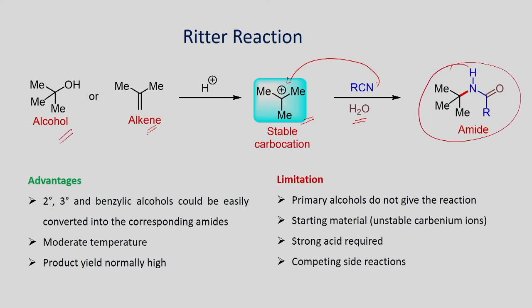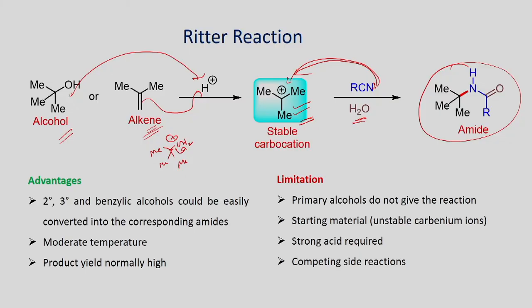If you have isobutene or tertiary butanol, when you react with acid, protonation occurs and you form the hydronium ion, which can lose water by E1 elimination to form a stable tertiary carbocation. This tertiary carbocation can readily undergo reaction with the lone pair of the nitrogen of the nitrile to form the iminium ion. The iminium ion can then react with water acting as a nucleophile, giving the amide as a product.